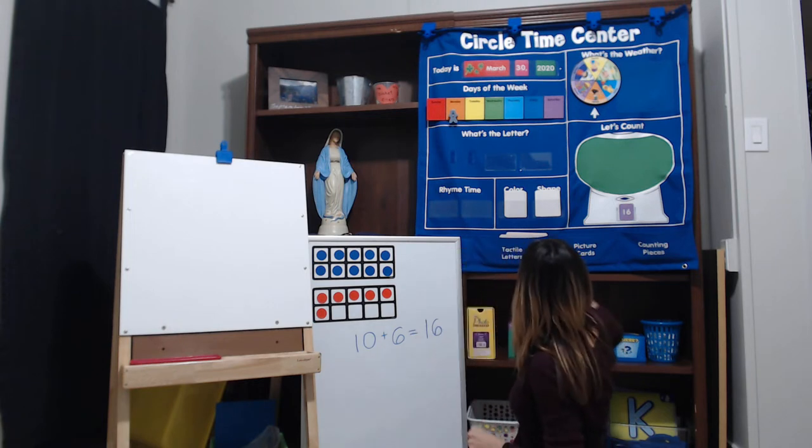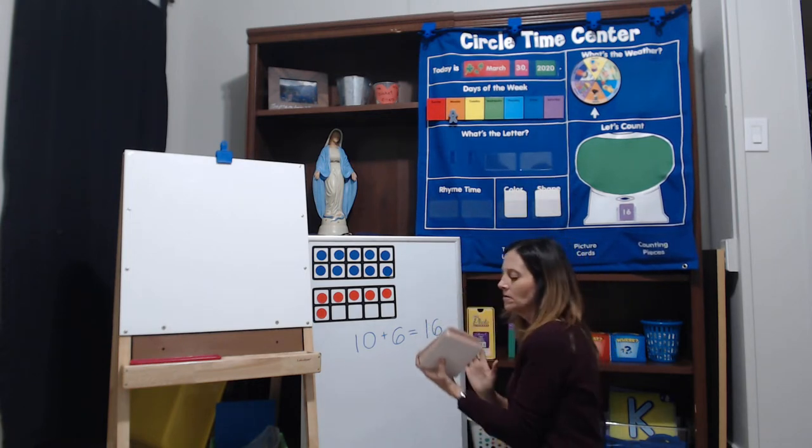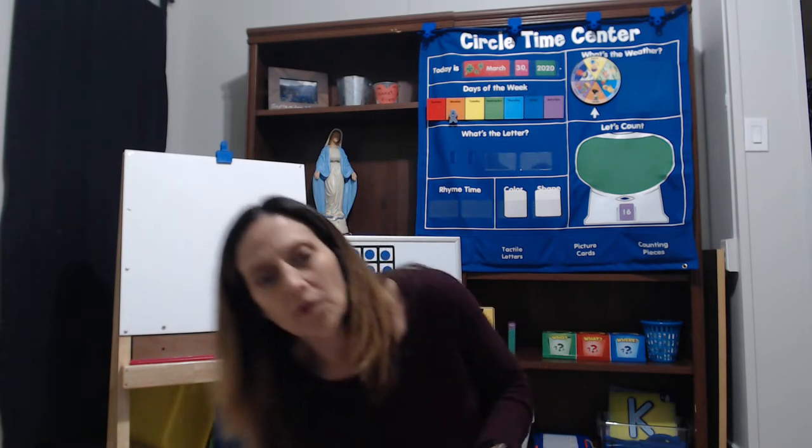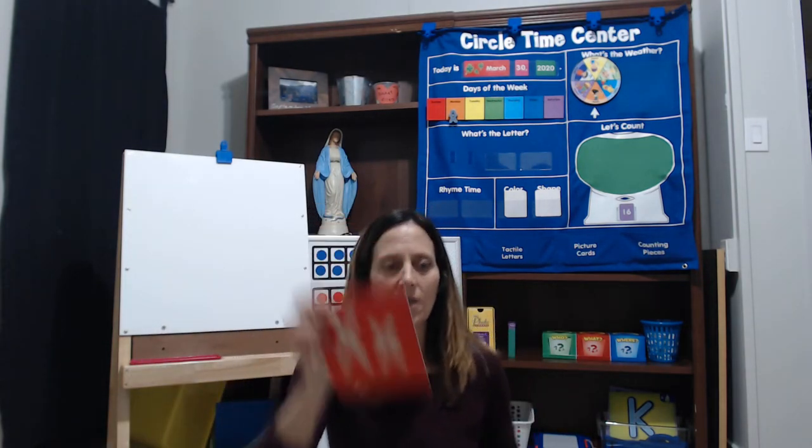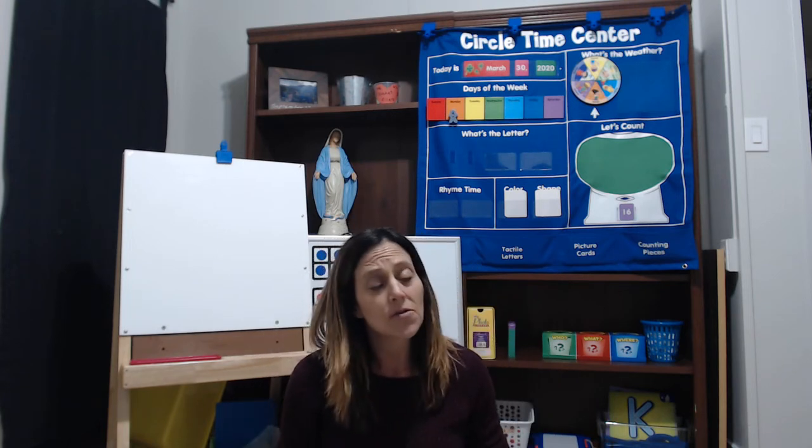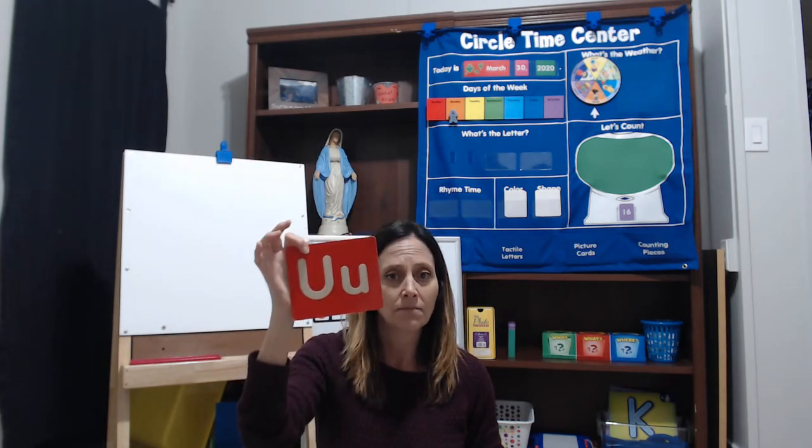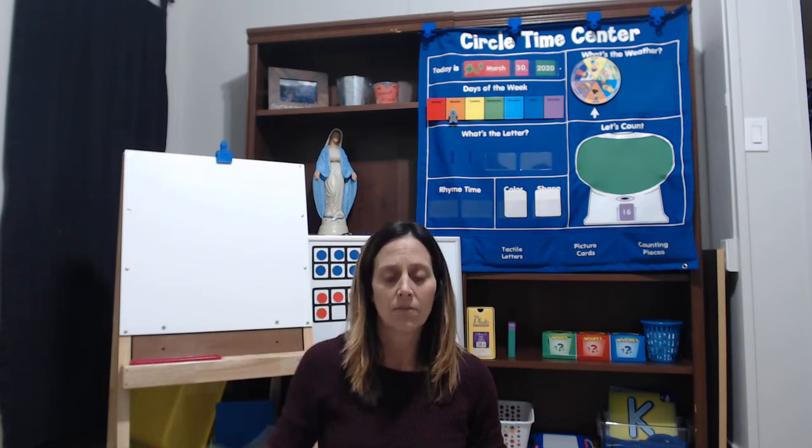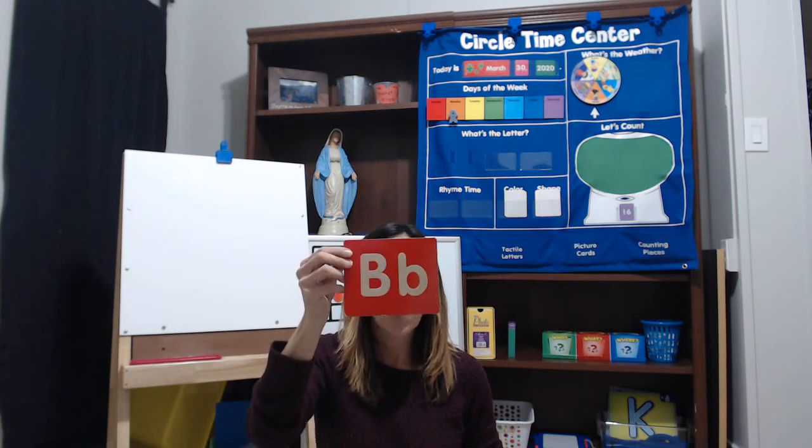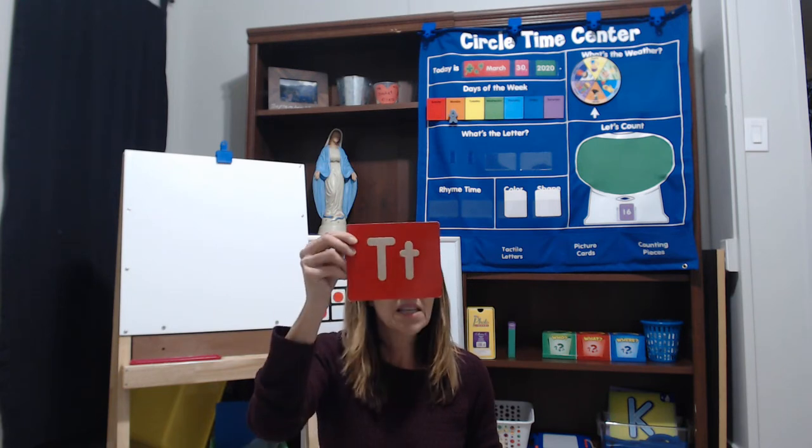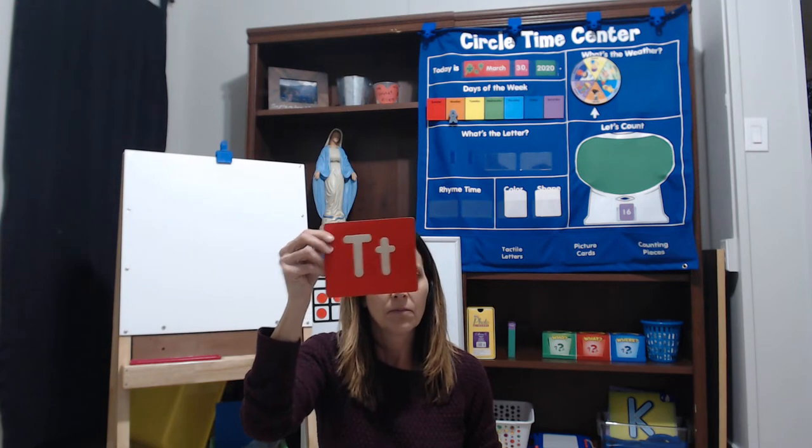Okie dokie. So we are going to go ahead and move on to our letter sounds. I'm going to review these with you really quickly. I'm going to come up a little bit closer so you guys can see them really well. And remember, you're my echo. So as soon as I put them up, I'll give you a second and you do the sound. Ready? Here we go. M, S, C, J, K, Y, D, G, N.